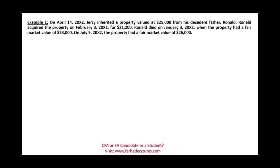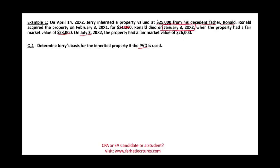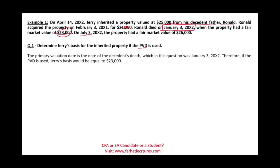Example: On April 14, Jerry inherited property valued at $25,000 from his decedent father, Ronald. Ronald acquired the property on February 3, 20X1 for $21,200. Ronald died on January 3, 20X2 when the property had a fair value of $23,000. On July 3 — which is six months after January 3 — the property had a value of $26,000. If the primary valuation date is used, the date of death is January 3, 20X2, and therefore Jerry's basis would equal $23,000.